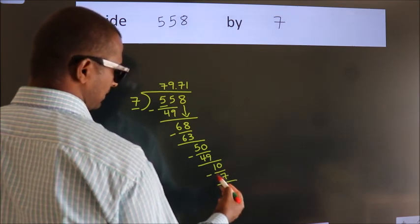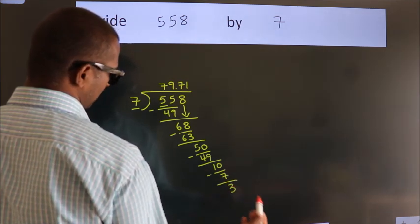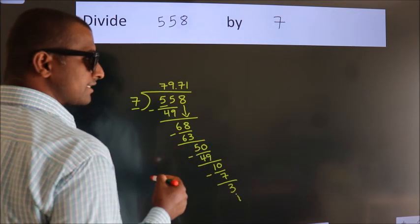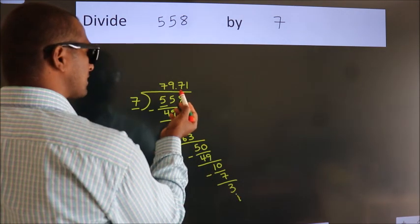Now we subtract. We get 3, and the division continues. It is enough if we do up to 2 decimal places.